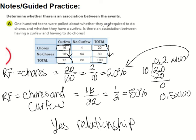So the way we did this is we looked at the second category first — what is the relative frequency of just having chores — and then we compared it to curfew. That's the idea of how to do these associations.